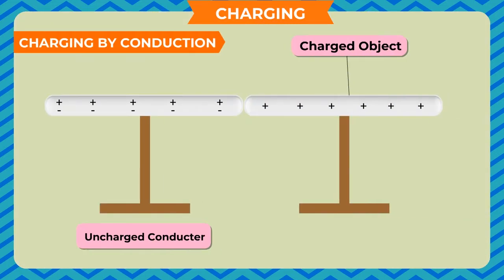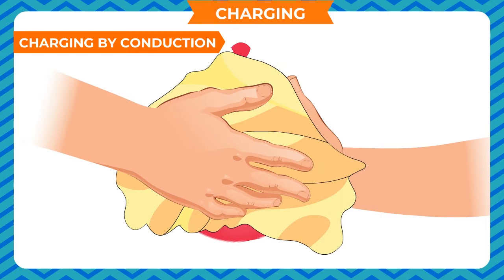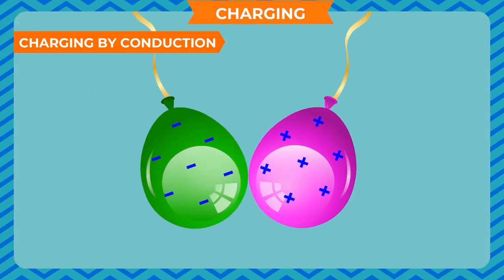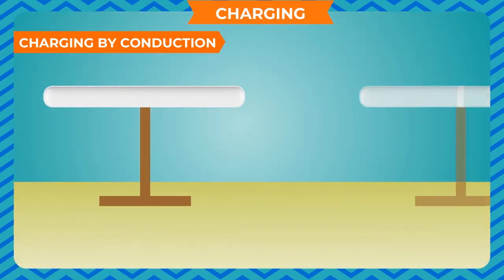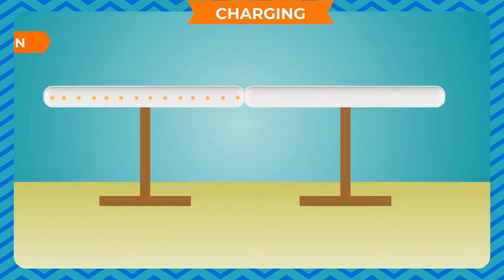Charging by conduction: Rubbing is not the only way of charging a body. A body can also be charged by touching it to a charged body. This happens because some charge from the charged body gets transferred to the uncharged body. It is called charging by conduction.